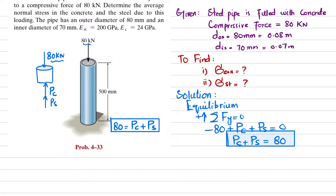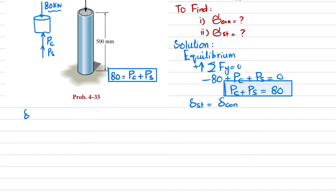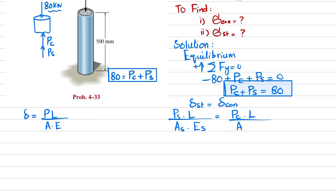Since the loading acts on both materials together, the deformation in steel equals the deformation in concrete. We know that deformation δ = PL / (A·E). So for steel: Ps·L / (As·Es) = Pc·L / (Ac·Ec).